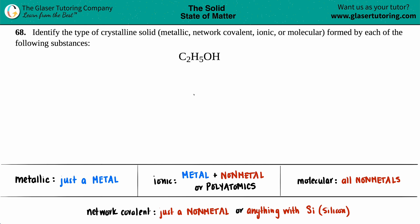Number 68: Identify the type of crystalline solid, whether it's a metallic, a network covalent, an ionic, or a molecular crystalline solid that's formed by each of the following substances. And then we have ethanol, which is C2H5OH.